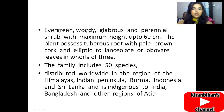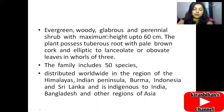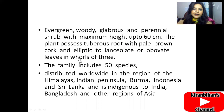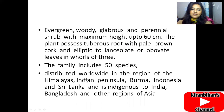Rauwolfia serpentina is an evergreen, woody, glabrous, and perennial shrub — meaning it grows in every season — with a maximum height of up to 60 centimeters. The plant possesses tuberous roots with pale brown cork, and elliptic to lanceolate leaves arranged in whorls of three. The family includes 50 species distributed worldwide, particularly in the Himalayas, India, Burma, Indonesia, Sri Lanka, and is indigenous to India, Bangladesh, and other regions of Asia.